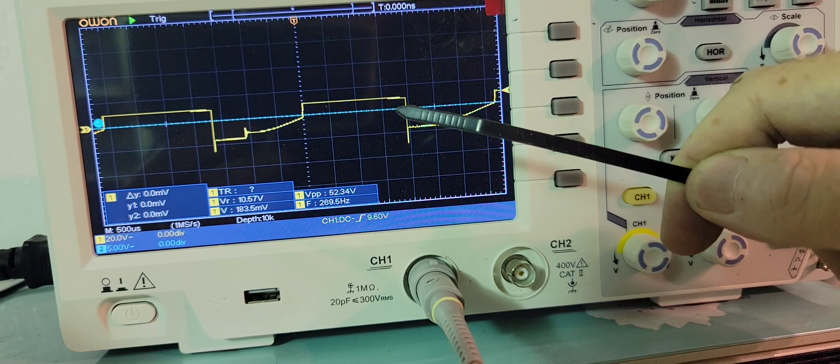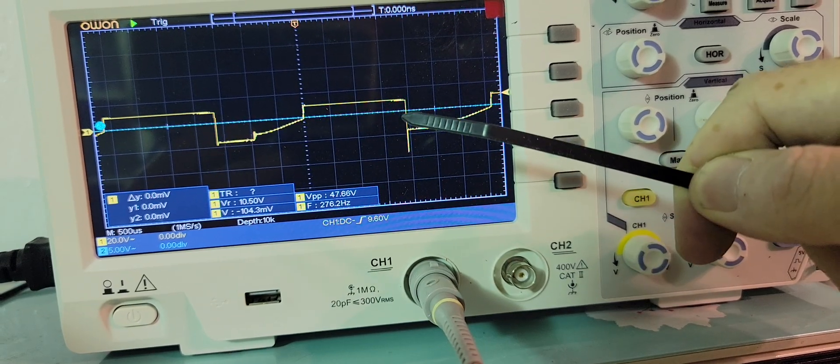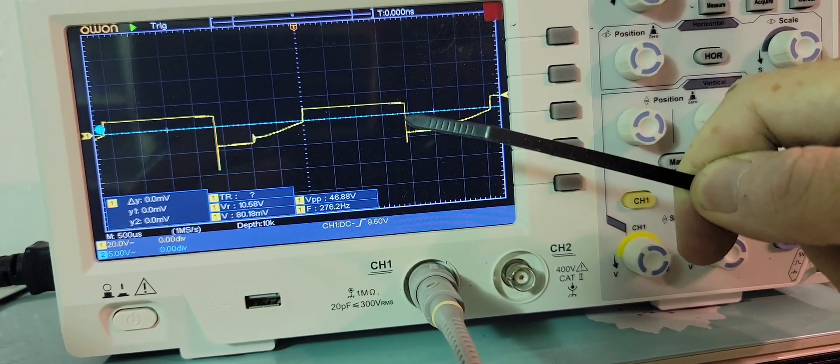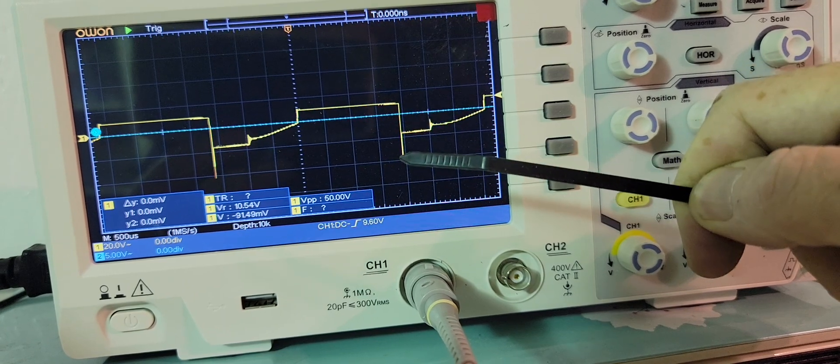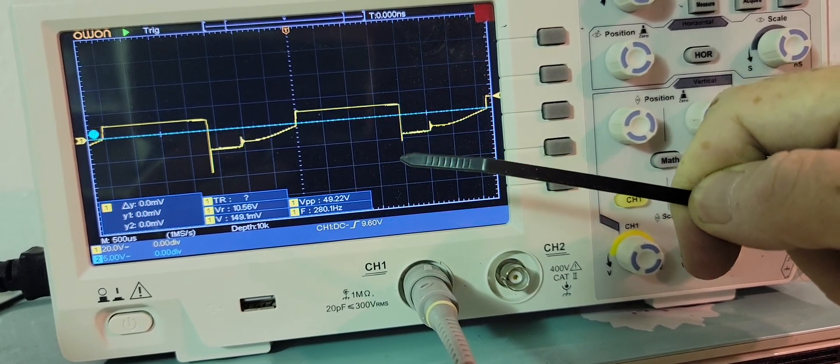So that square wave up there is the input signal into the motor. This coming down is the back spike that comes out of the motor.